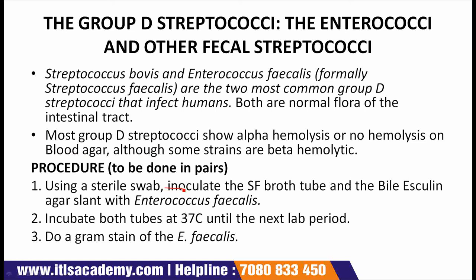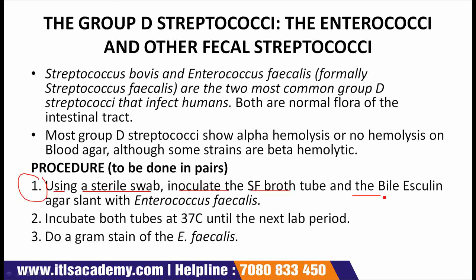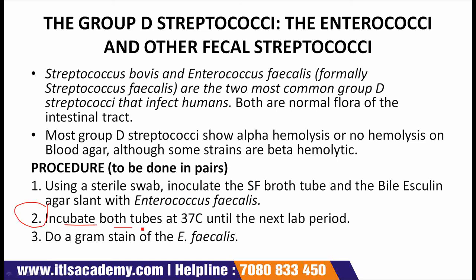Here comes the procedure for group D, to be done in pairs. First point: using a sterile swab, inoculate the SF broth tube and the bile esculin agar slant with enterococcus fecalis. Point 2: incubate both tubes at 37 degrees centigrade until the next lab period. Point 3: do a gram stain of the enterococcus fecalis.